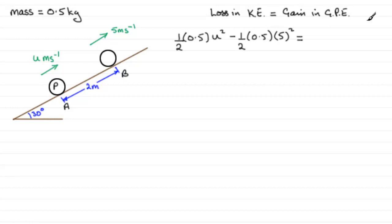For the gain in gravitational potential energy, if we take this level here to be zero, our particle P has risen a distance from here up to there as it goes from A to B. Let's say that height gained is h.